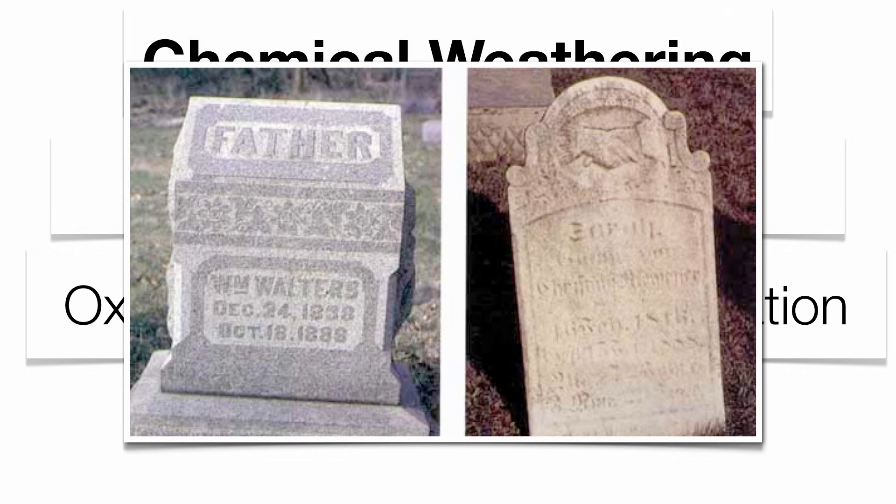A good place to check this out is in a graveyard. If you look at the headstones, it's very easy to tell what rock is resistant to weathering and what rock is less resistant, based upon the clarity of the letters and numbers on the headstone. If the letters and numbers are really wiped out, you probably have a pretty soft rock. If they're still very legible, you probably have a really resistant rock.